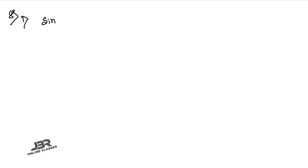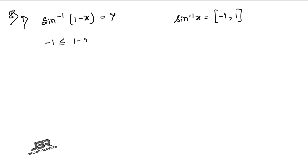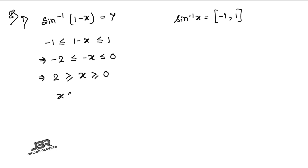Sum number 8.1: Find the domain of sin⁻¹(1 − x). The domain of sin⁻¹(x) is [−1, 1], so we need −1 ≤ 1 − x ≤ 1. This gives −2 ≤ −x ≤ 0. Multiplying by −1 (reversing inequalities): 0 ≤ x ≤ 2. Therefore the domain is [0, 2].